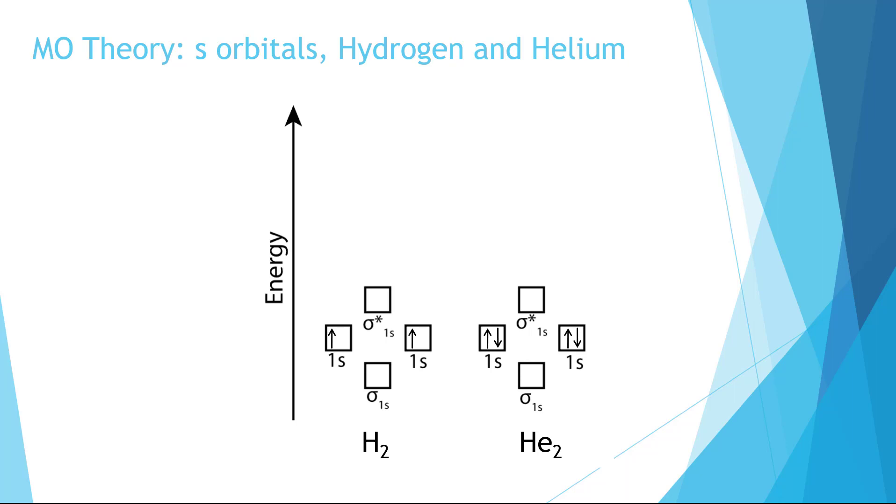Let's start with hydrogen. We have two electrons, one that comes from each hydrogen. We can fill these in starting with the lowest energy level. Just like the atomic orbitals, molecular orbitals can hold two electrons.